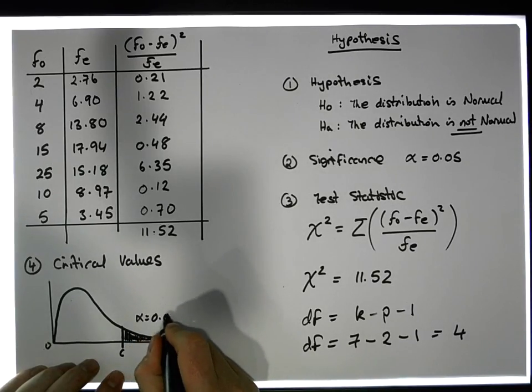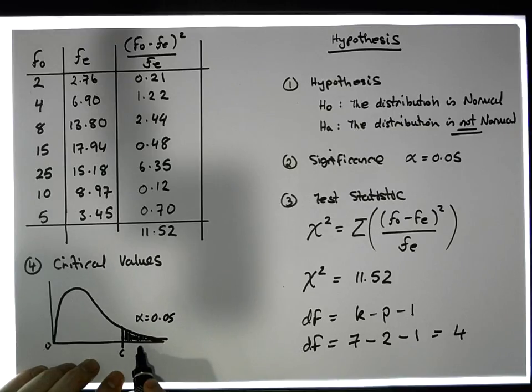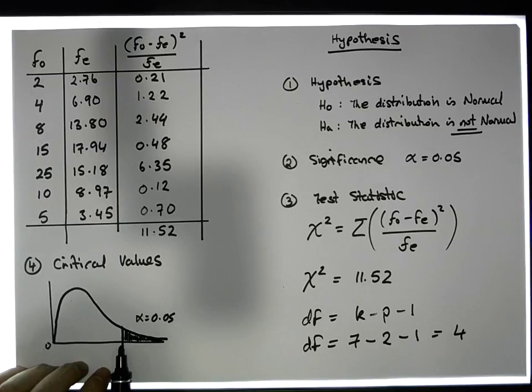We're putting all the area in the tail because any test statistic that is here has a probability that we'd only observe a test statistic as extreme as that at least 0.05 of the time, or with a probability of 0.05.